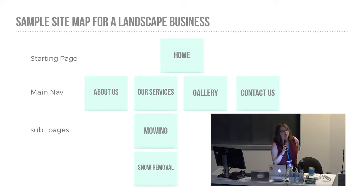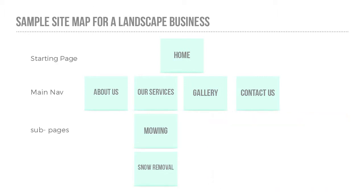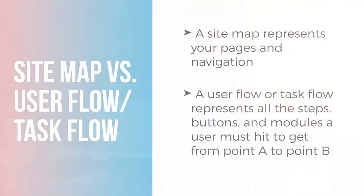Something that can be confusing online is that site maps are sometimes confused with user flows or task flows — they have a similar name and look. The difference is in what they represent. A site map is about your pages and the structure of your navigation. A user flow is about how a user gets from point A to point B. A great analogy: a site map is like looking at a map of a territory from a bird's eye view with all major landmarks visible, while a user flow is like putting in coordinates for directions in Google Maps — you can see which route to take, where to turn, and how many miles it takes.